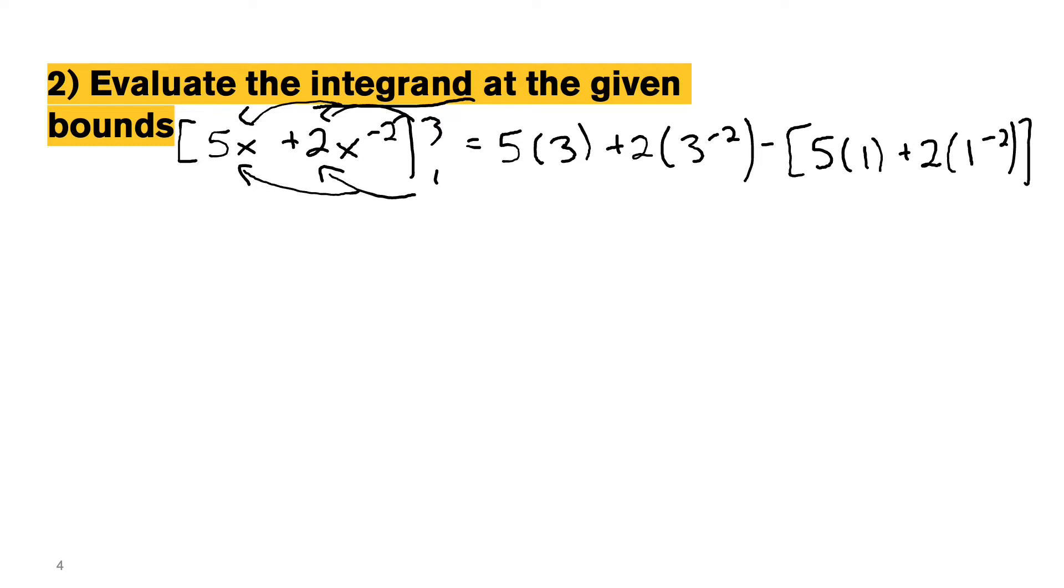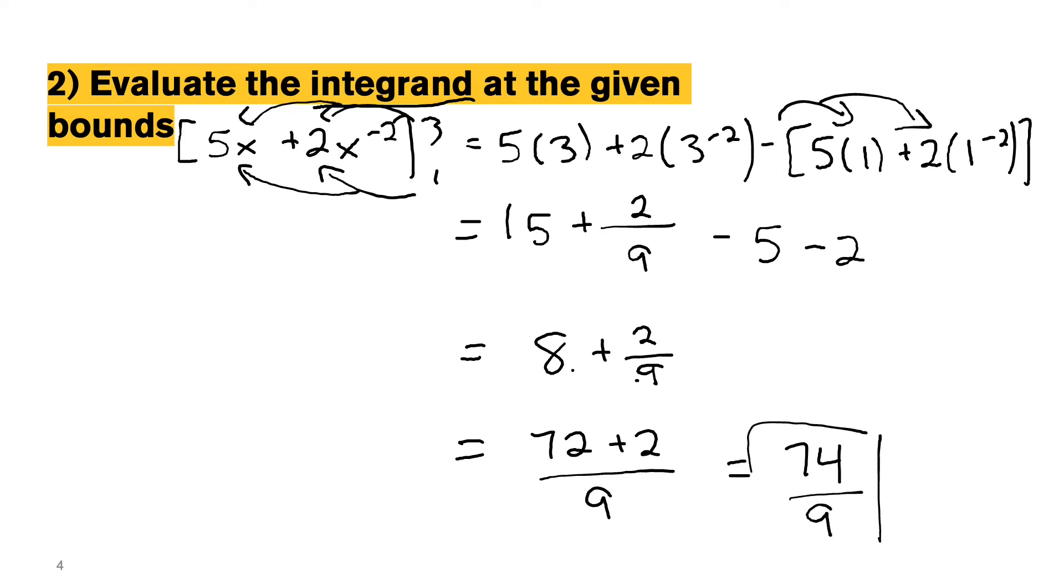So then simplifying that, we get 15 plus 2 over 3 squared, which is just 9 minus 5 minus 2. Don't forget to distribute your negative sign. So then we can just add our whole numbers first. So 15 minus 5 is 10 minus 2 is 8 plus the 2 ninths. So then giving ourselves a common denominator, 8 times 9 is 72 plus 2. The whole thing over 9 gives us 74 over 9. And that is our answer.